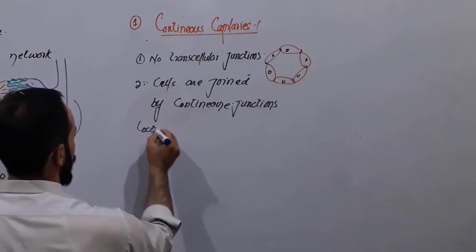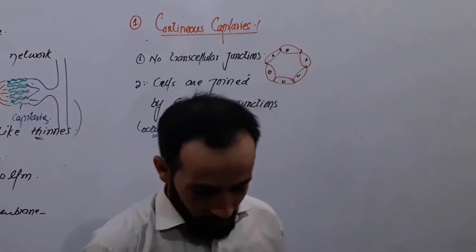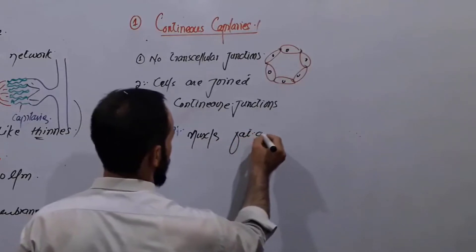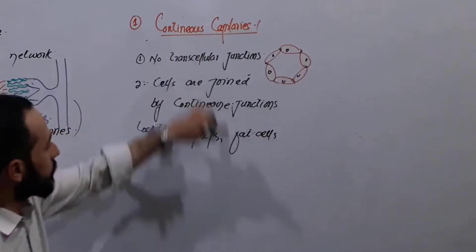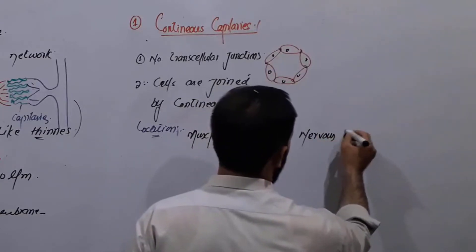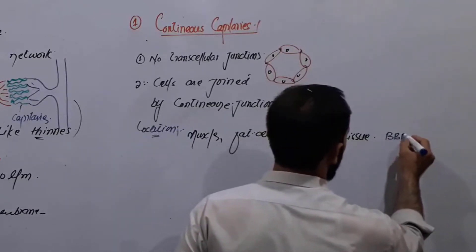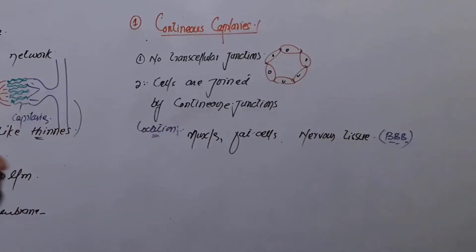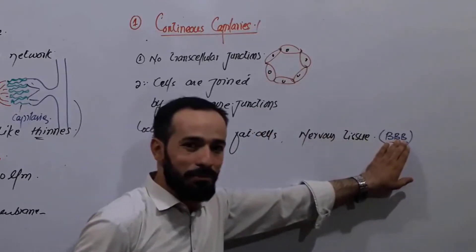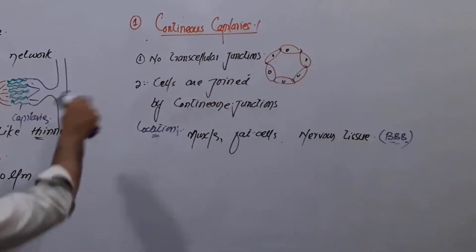What is the location of continuous capillaries in our body? These important capillaries are found in muscles and fat cells. They are also found in nervous tissue, where they make the blood-brain barrier (BBB). So around our nervous tissue, there is a protective cover called the blood-brain barrier, formed by continuous capillaries.